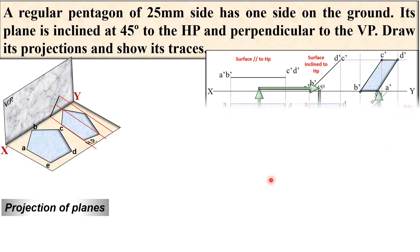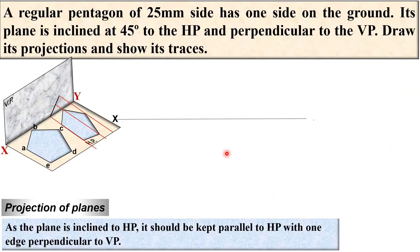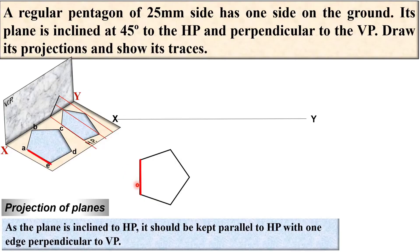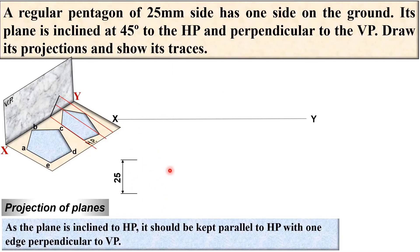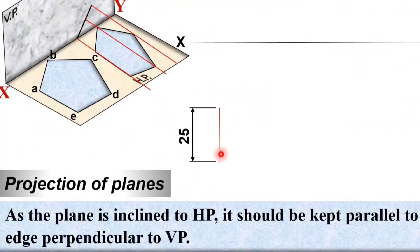Let us start with the top view. First draw the reference line XY, then draw the top view — that is the pentagon. Keep in mind that this edge which is on the ground must be perpendicular to XY and should be on the left side. Now the question is how to draw this pentagon. First give the dimension — 25 mm as given in the description. We will mark the AE side on the left.